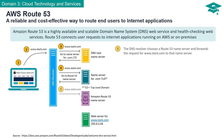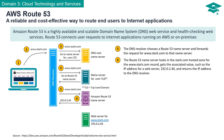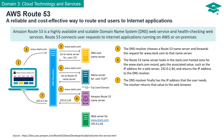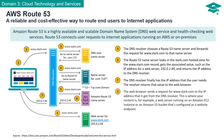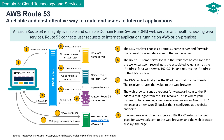The DNS Resolver selects a Route 53 name server and sends the request to it. The Route 53 name server searches in the stark.com hosted zone for the www.stark.com record, retrieves the associated IP address — for example, 192.0.2.44 — and returns it to the DNS Resolver. The DNS Resolver sends the IP address back to the web browser, which initiates a request to that IP address. The web server — hosted on an Amazon EC2 instance or an Amazon S3 bucket configured as a website — sends the web page for www.stark.com to the web browser, which displays the content.